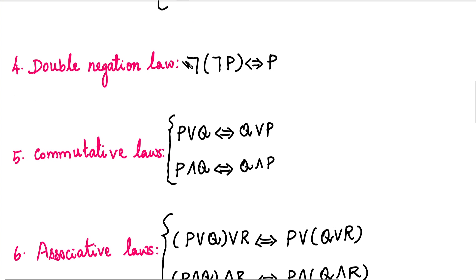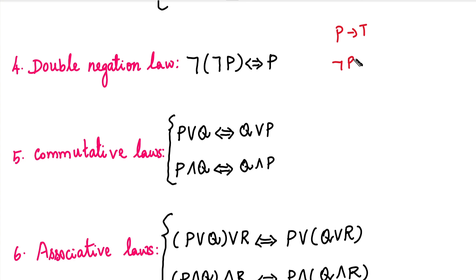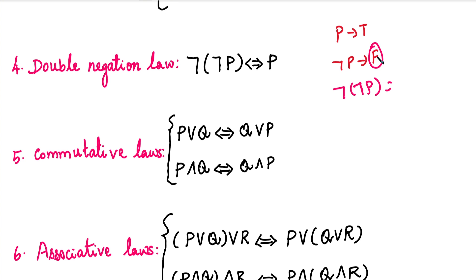Next we have double negation. That is: negation of negation P is equal to P. For example, if P is true, then negation P is false. So negation of negation P equals true. So P and negation of negation P have the same value.